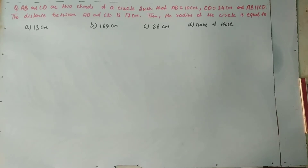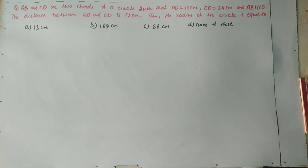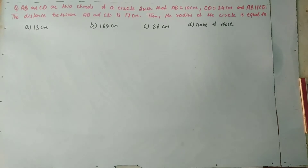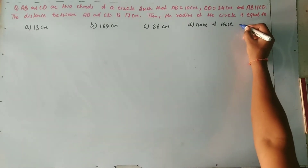तो इनमें से कौन सा option correct होगा? पूछा जा रहा है, एक circle है जिसके अंदर AB 10 cm है — chord, यानी जीवा — और second chord CD है 24 cm, और AB हमारा CD के parallel है। AB और CD का distance भी दिया हुआ है 17 cm। तो इस case में circle का radius क्या होगा?